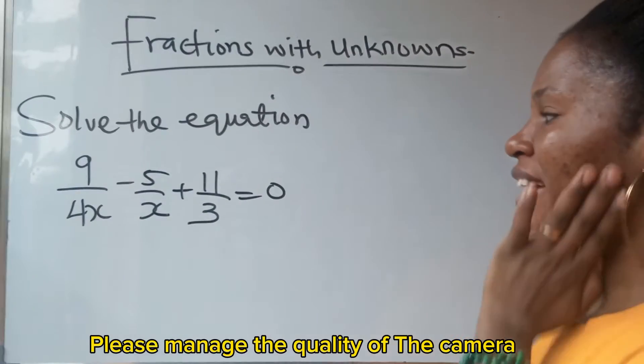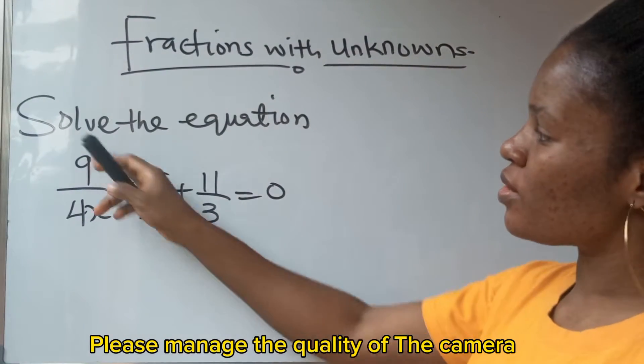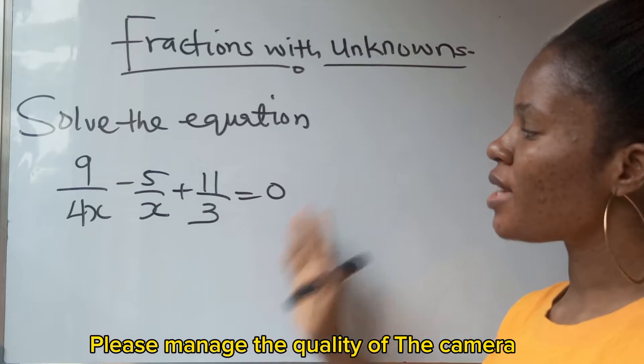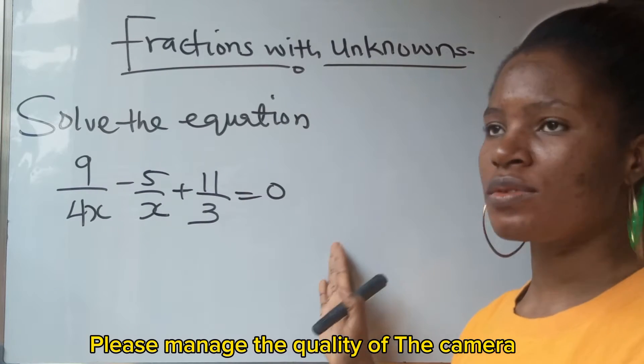Welcome to my channel. Let us solve this. You are asked to solve the equation 9 over 4x minus 5 over x plus 11 over 3 is equal to 0.